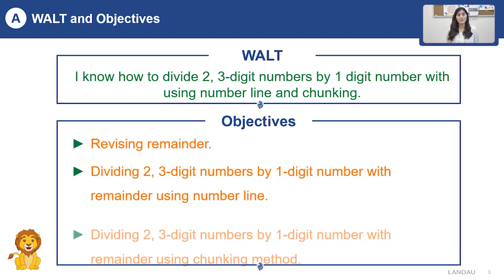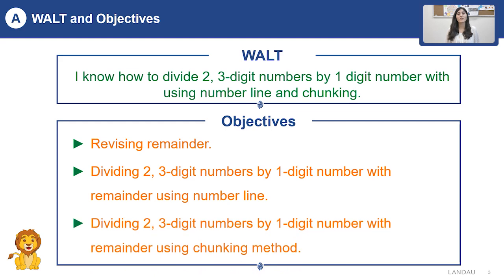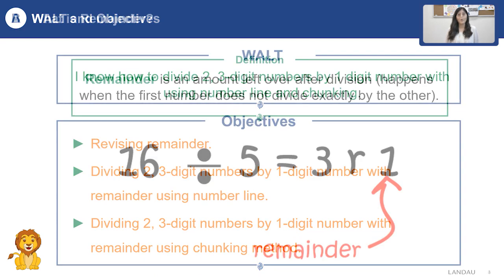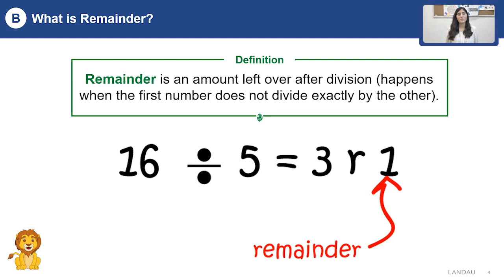Our objectives are: revising remainder and learning how to divide numbers using chunking method or number line method. What is remainder? Remainder is an amount left over after division. It happens when the first number doesn't divide exactly by the second one. For example, 16 divided by 5 will be 3 and remainder 1.